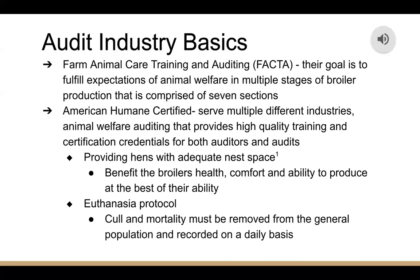For audit industry basics, I will be talking about the two companies we used in creating the tools. The first is Farm Animal Care Training and Auditing (FACTA), whose goal is to fill expectations of animal welfare in multiple stages of broiler production, comprised of seven different sections. The other is American Humane Certified, which serves multiple different industries of animal welfare auditing and provides high-quality training and certification credentials for both auditors and audits. Some of the tools include providing hens with adequate nest space, which benefits broiler health, comfort, and ability to produce at their best, and a euthanasia protocol ensuring that culls and mortalities are removed from the general population and reported on a daily basis by the workers.